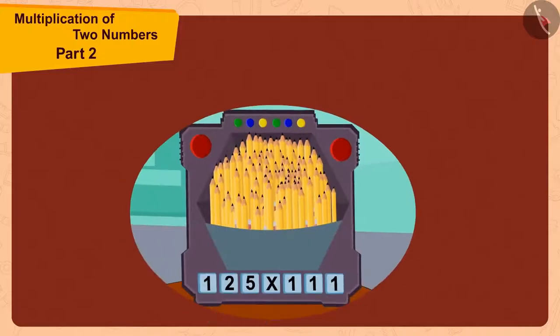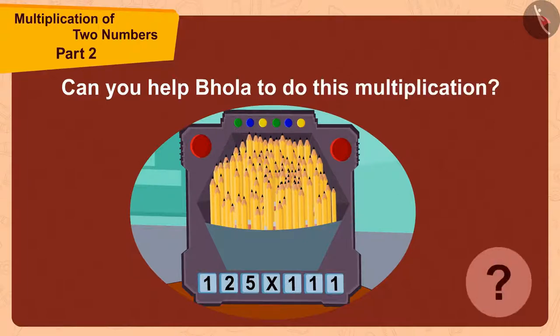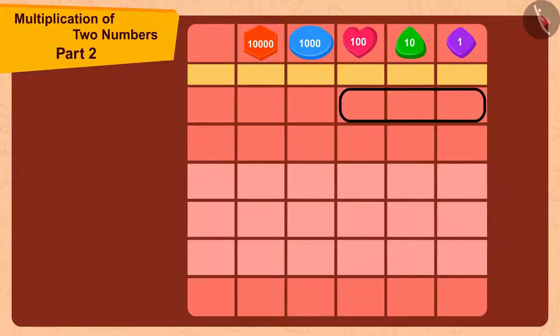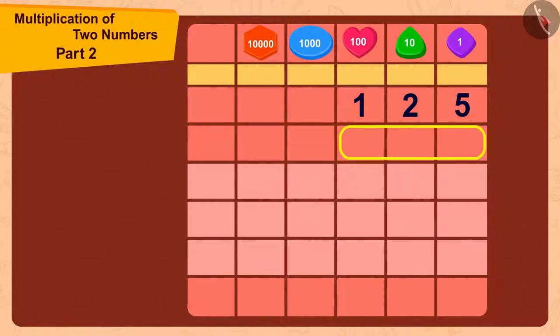Children, can you help Bhola to do this multiplication? Let's do this together. Here we are multiplying a three-digit number, 125, with another three-digit number, 111.